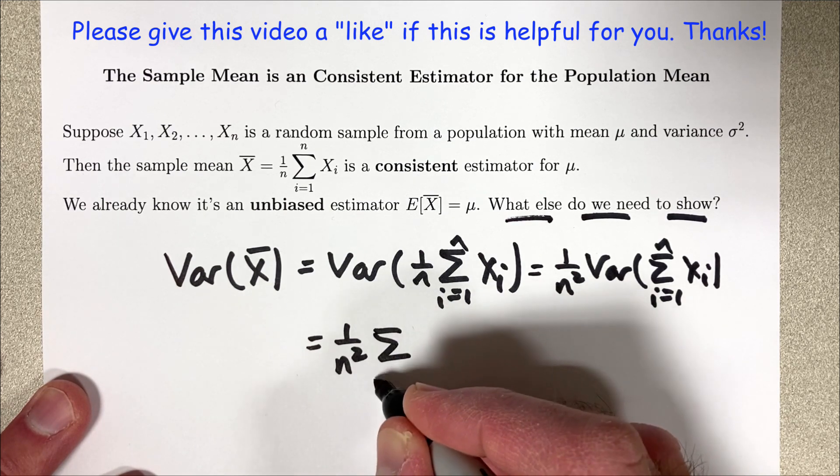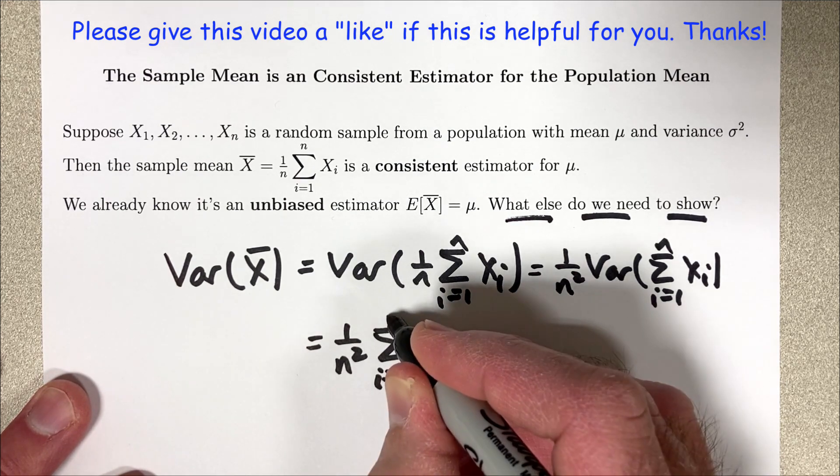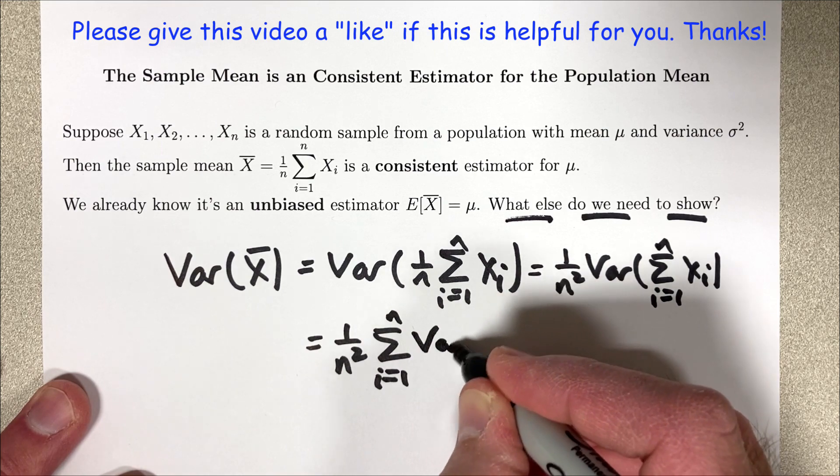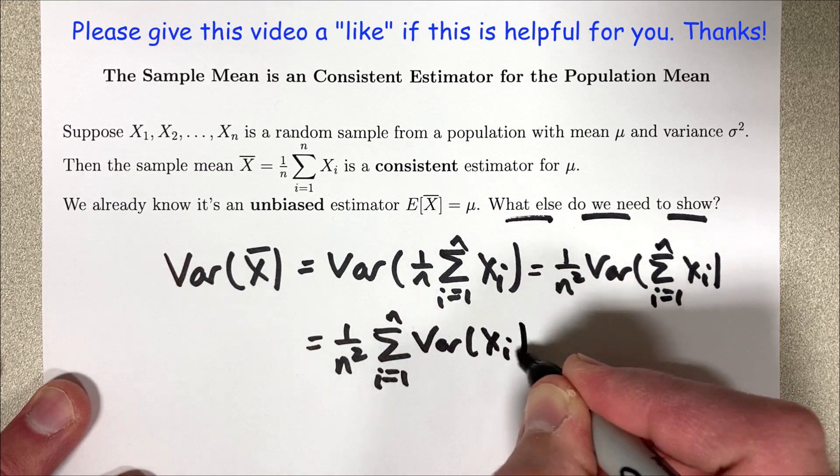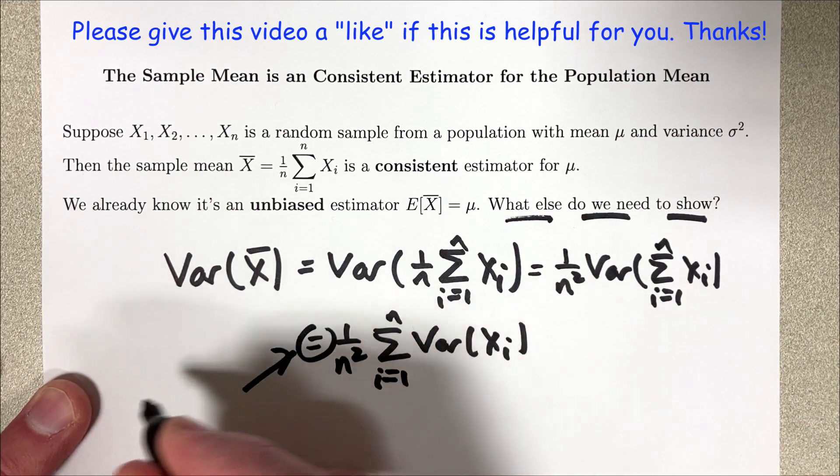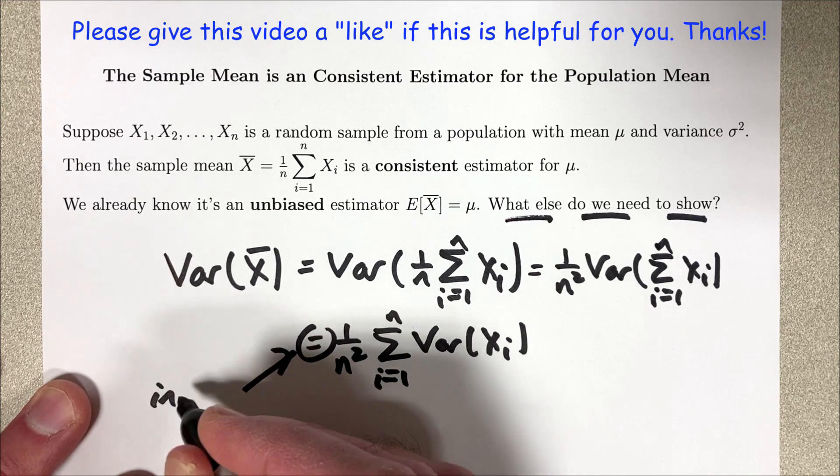1 over n squared times the summation i goes from 1 to n of the variance of each xi. So that again is by independence. That's assumed when you have a random sample.